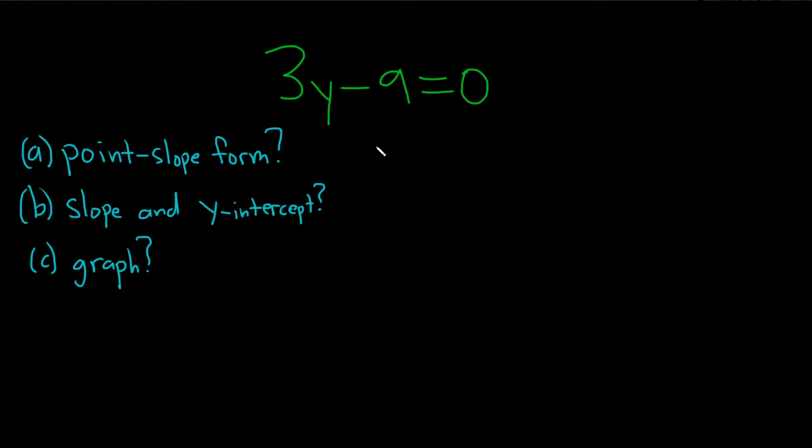Hello, in this problem we have the equation of a line and we're asked various questions. Part A wants the point-slope form, which is basically y equals mx plus b, so write this in this form.